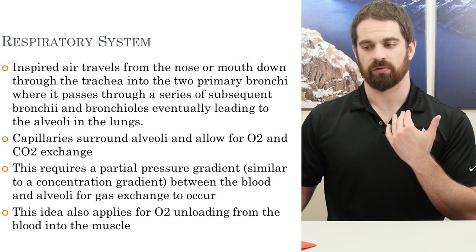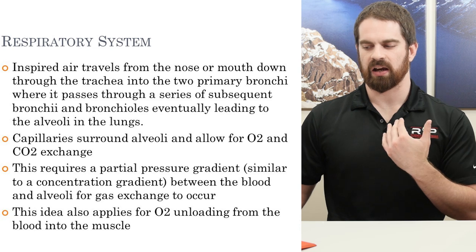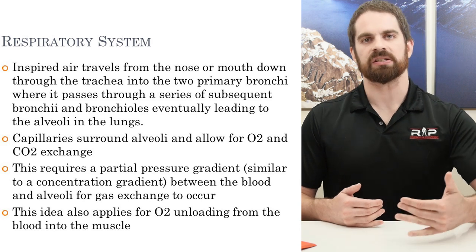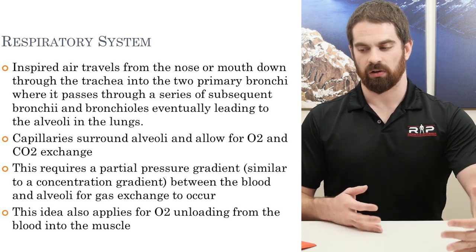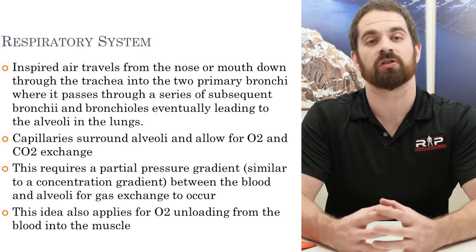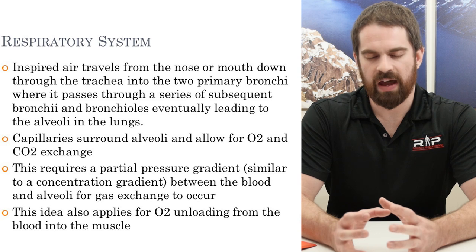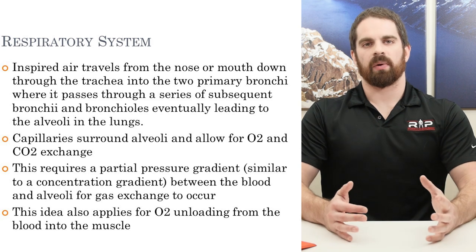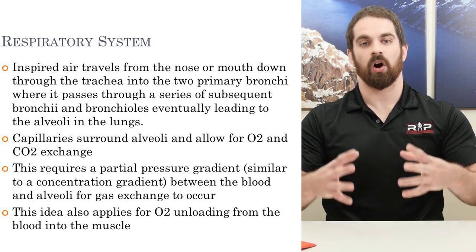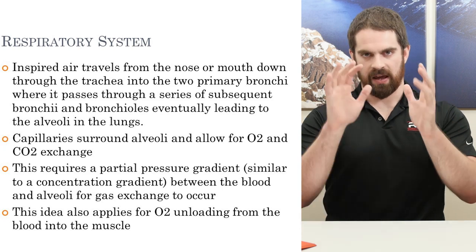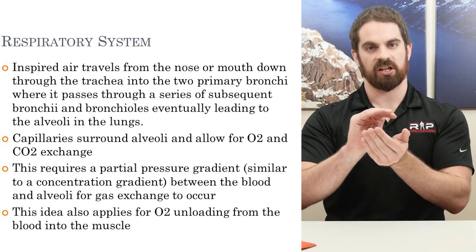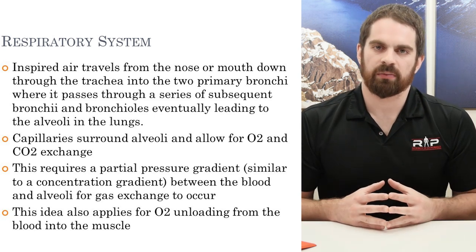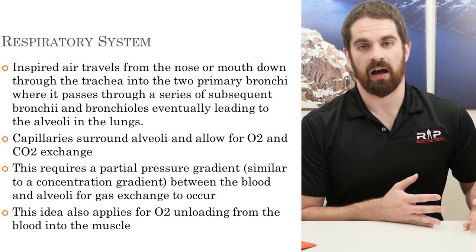Inspired air goes through the nose or mouth into the trachea, reaching the two primary bronchi, then branching through a series of bronchi, into bronchioles, and eventually to the smaller exchange surface called the alveoli. The capillaries surround the alveoli and allow oxygen and carbon dioxide exchange to occur. This is the articulating surface where blood and lungs interact and actually exchange gas — at the alveoli. This works similarly to what we learned about active and passive transport.